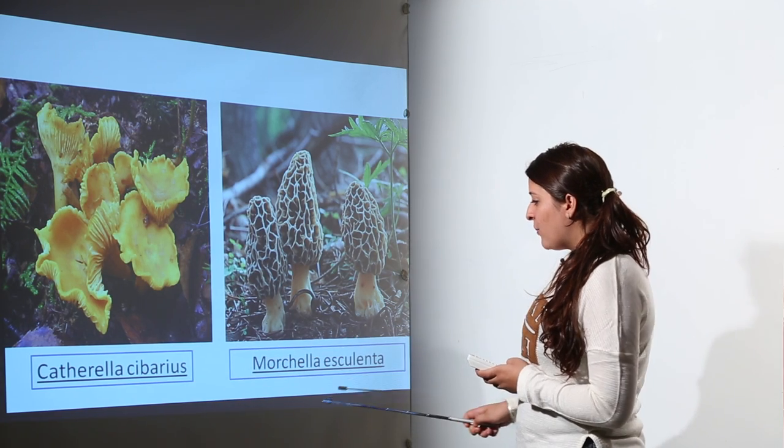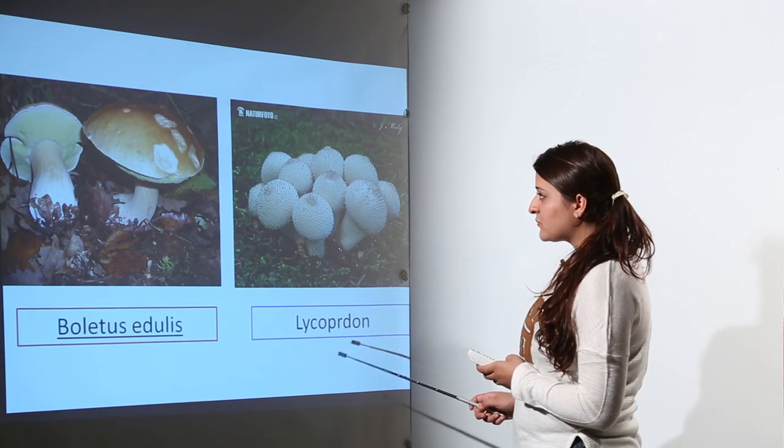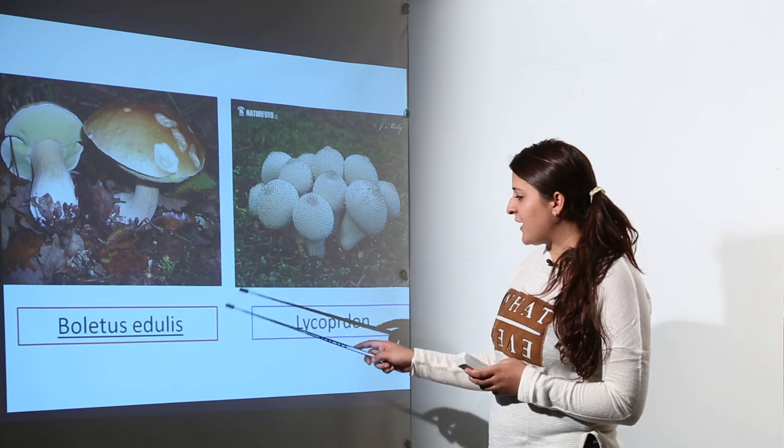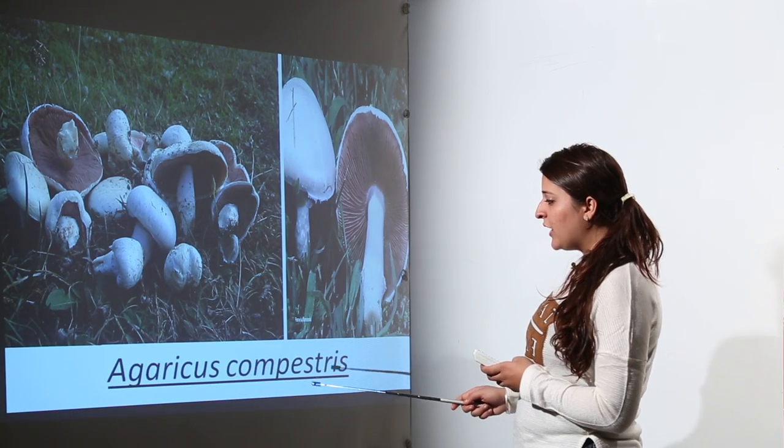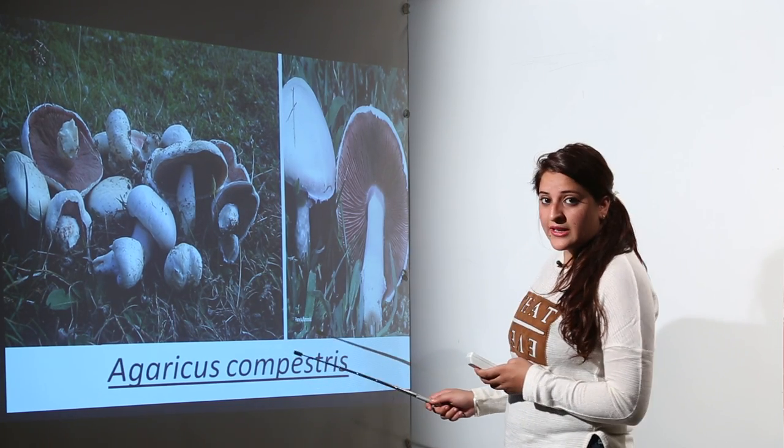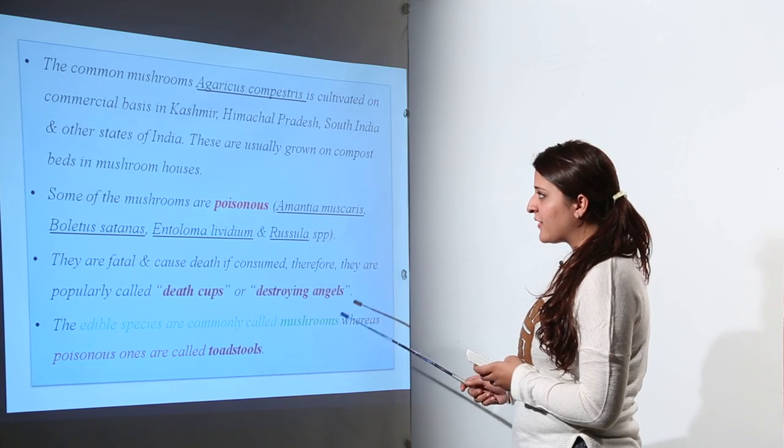Examples include Cetrella sibaricus, Morchella esculenta, Boletus edulis, Lycoperdon, and Agaricus campestris, which is another type of mushroom used as edible food.